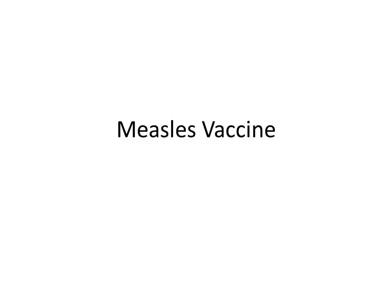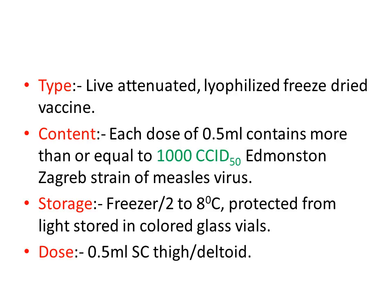Now we will discuss about measles vaccine. Measles vaccine is a live attenuated lyophilized freeze-dried vaccine. Each dose of 0.5 ml contains more than or equal to 1000 CCID of Edmonston Zagreb strain of measles virus.